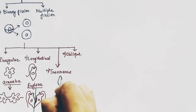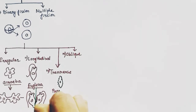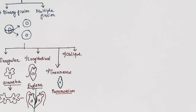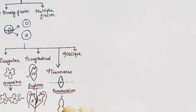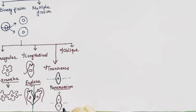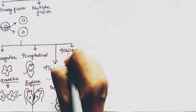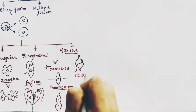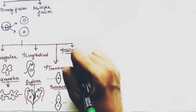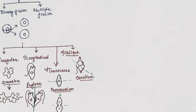In transverse binary fission, the plane of division goes through the transverse axis of the organism. You can see that the division is going on through the transverse axis. In oblique binary fission, the plane of division is oblique. It is found in Ceratium, where the plane of division is oblique.